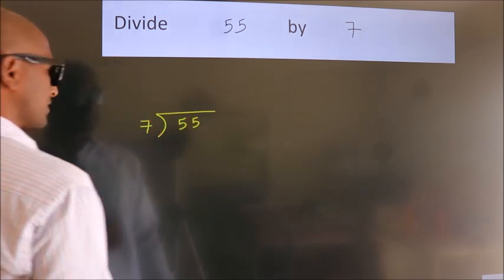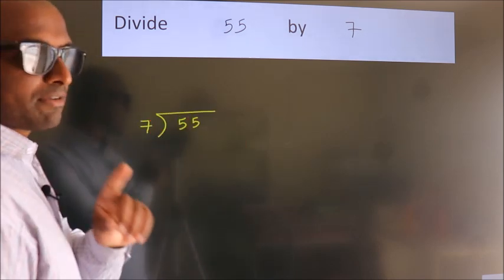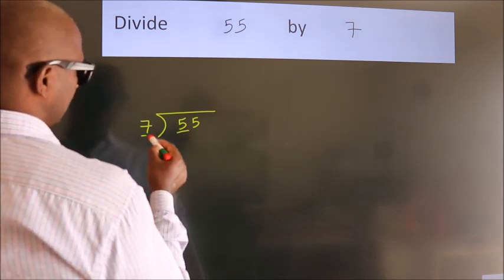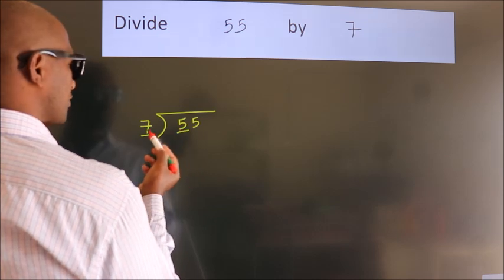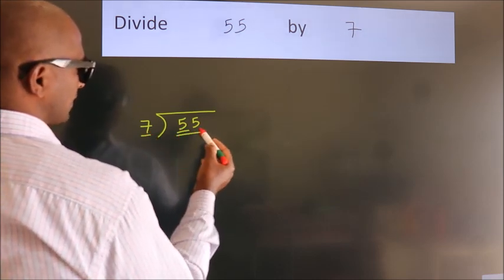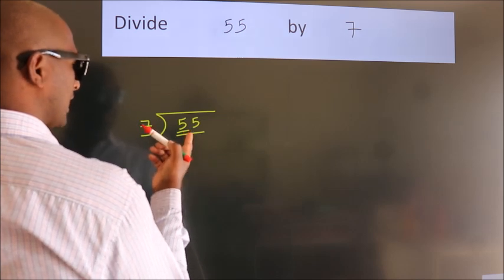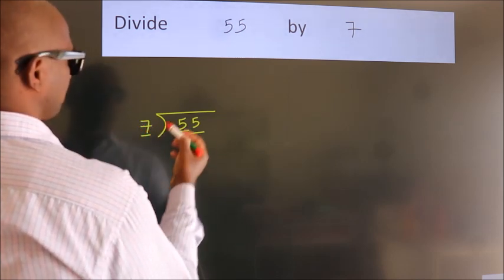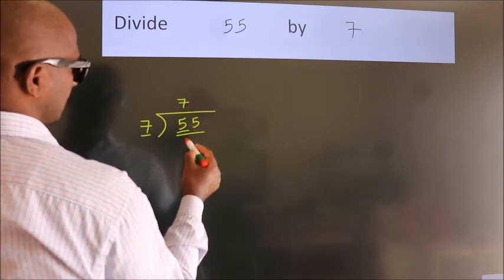This is your step 1. Next, here we have 5, here 7. 5 is smaller than 7, so we should take 2 numbers: 55. A number close to 55 in the 7 table is 7 times 7 equals 49.